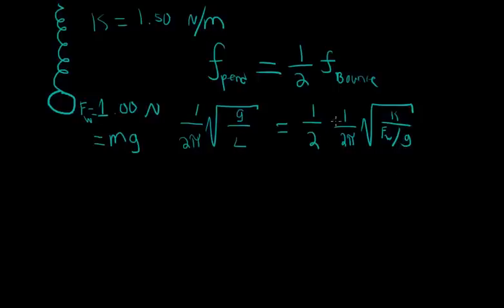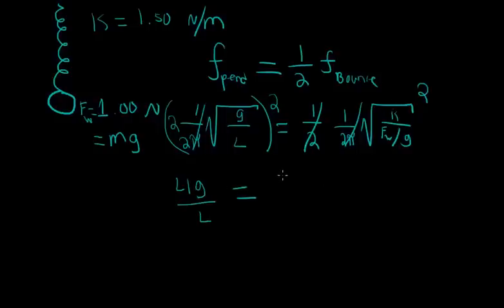All we have to do now is solve for our target variable L. We can cancel 1 over 2π, multiply the 2 over, and square everything. That leaves us with 4g/L equals kg/F_w. Then we solve for L, cancel the g's, and L equals 4 times the force of weight divided by k.